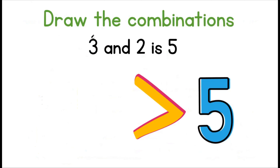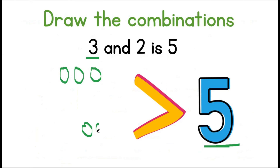Let us draw the combinations. Three and two is five. We draw one, two, three circles, then one, two more circles. Let us count all the circles together: one, two, three, four, five. We have five circles altogether.